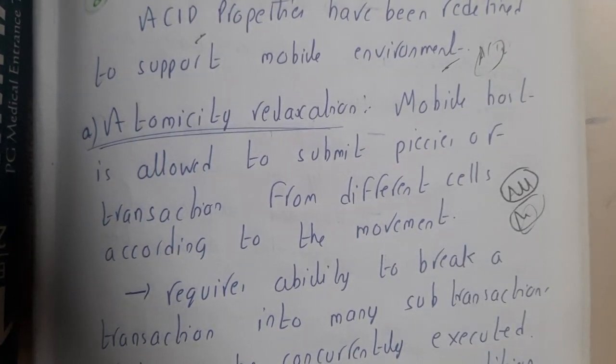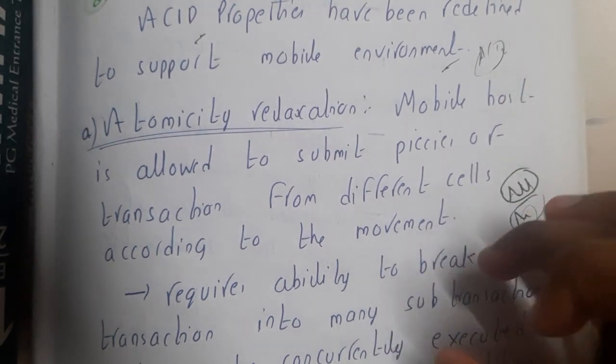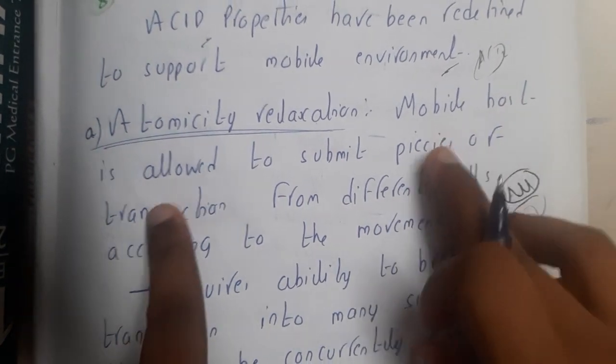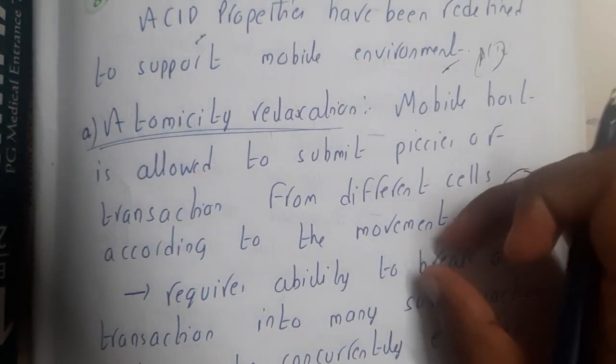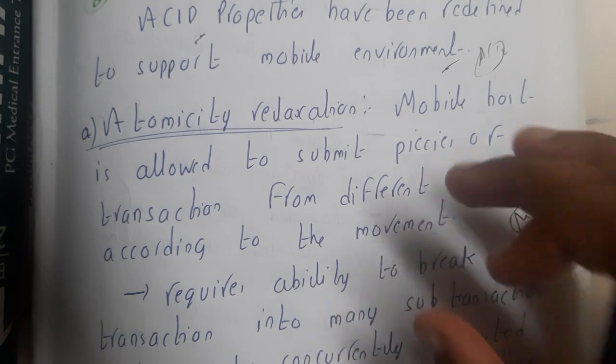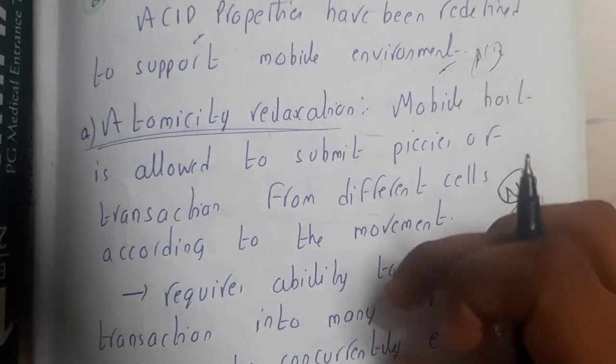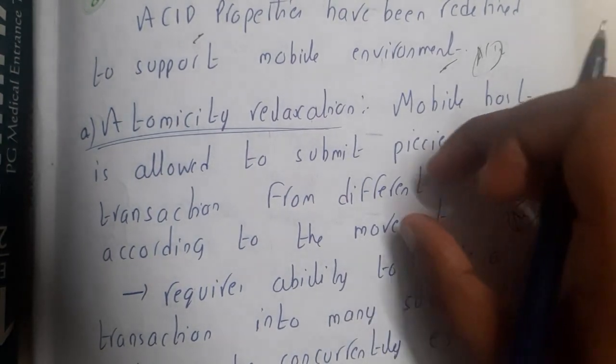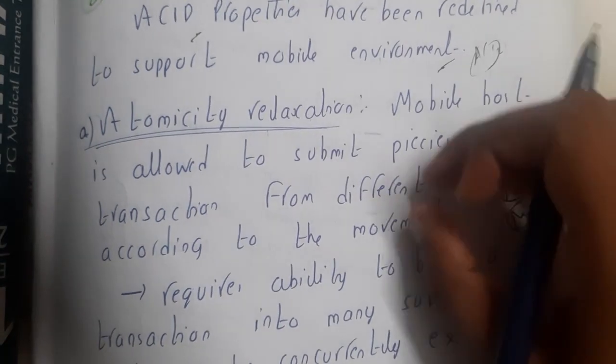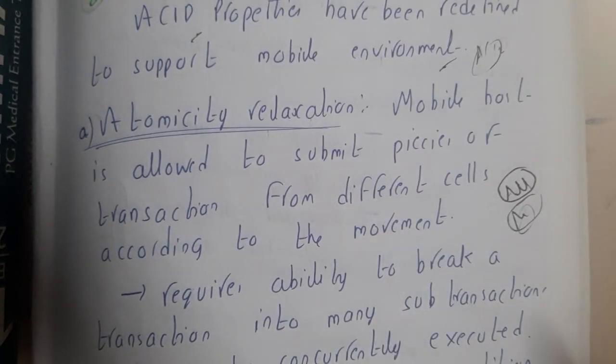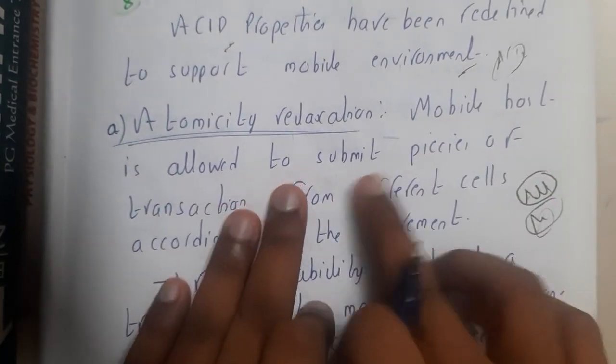Here in mobile computing we have updated it by a small part. Basically, the change is mobile host is allowed to submit pieces of transaction. If he wants to send some data and it can be made into multiple pieces, he can send the data from one place and move to some other place and send the second part. First half from one place and second half from the other place, only if the data can be divided into parts.